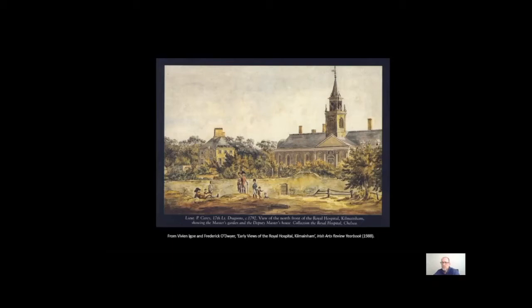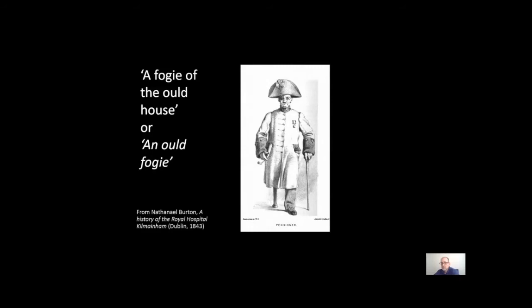Kilmainham was also placed geographically between town and country. Compared to the neighbouring city to its east, it could not claim to be a significant town, yet it was clearly more substantial than its neighbouring villages and hamlets to the west. Its people appeared old-fashioned and tended more towards the country than the city. Nathaniel Burton, in his History of the Royal Hospital Kilmainham of 1843, gives a tantalising glimpse of locals interacting with the city on one side and the rustic countryside on the other, noting that Kilmainham might be interpreted almost as a stepping stone between urban and rural.